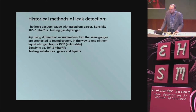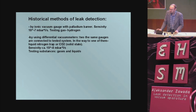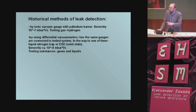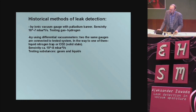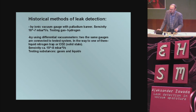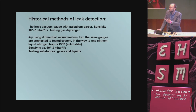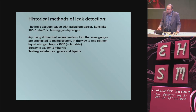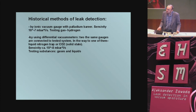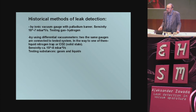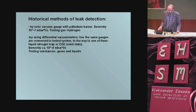Another method used differential vacuum meters — two identical gauges, such as Pirani or ionic gauges, connected to the tested system. In the line to one of these gauges there is a liquid nitrogen trap. If you use propane-butane or ethyl alcohol as the testing gas, it is trapped in this trap, so we have different pressure at one gauge and can detect the leak. Sensitivity is about 10⁻⁸ millibar·liter per second, but it's hard to use because we need liquid nitrogen and usually we don't have it.